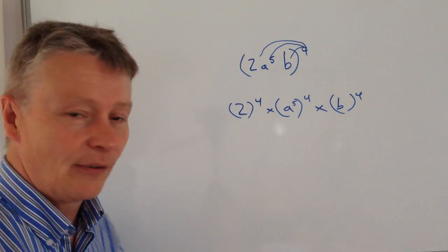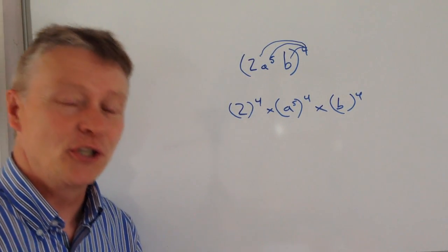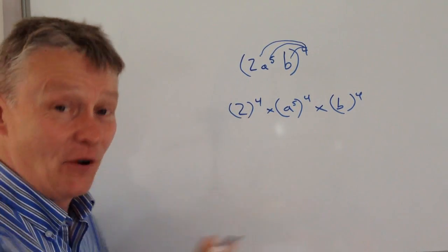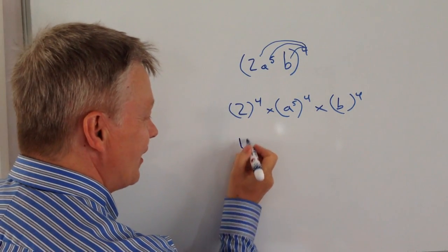So what we've got here is 2 to the power of 4. Well that's the same as saying 2 times 2 times 2 times 2, so it's 2 four times, and that's going to be 16.